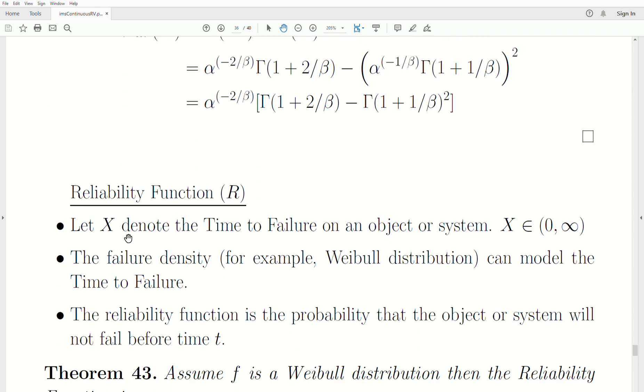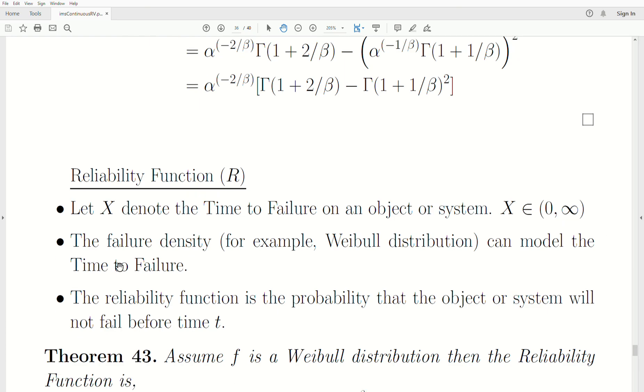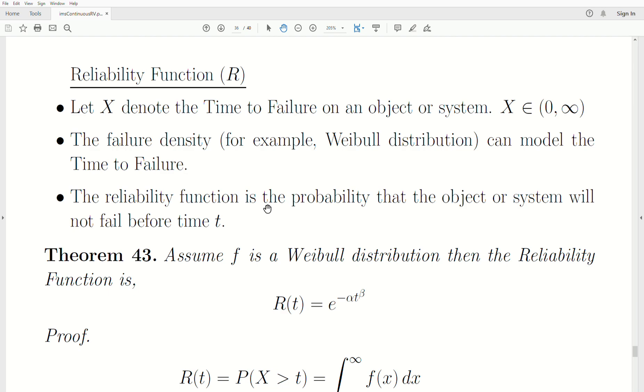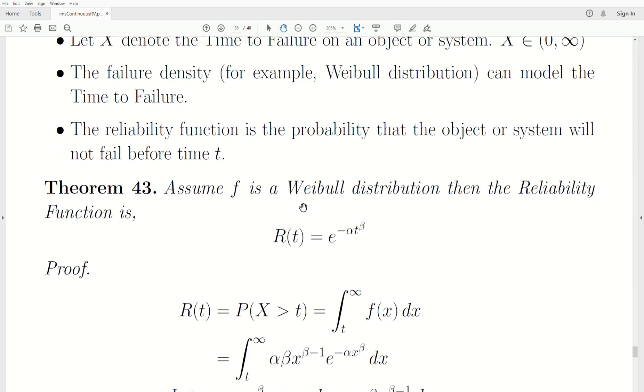The reliability function: let X denote the time to failure on an object or a system, in the interval zero to infinity. The failure density, for example, Weibull distribution can model the time to failure. Then the reliability function is a probability that the object or system will not fail before time t. Assume f is a Weibull distribution, then the reliability function R of t is equal to e raised to the minus alpha t raised to the beta.